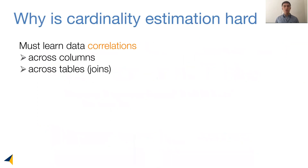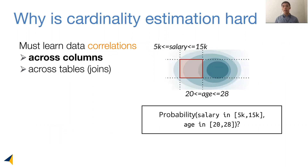The key challenge in cardinality estimation is the need to capture data correlations. For example, here is a 2D dataset showing salary and age. In order to answer a probability query, or equivalently a cardinality query like this, the estimator must learn to capture the positive correlations between these two attributes.